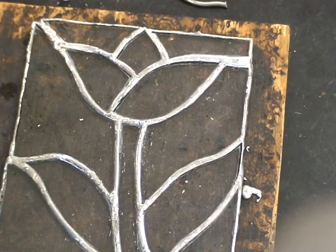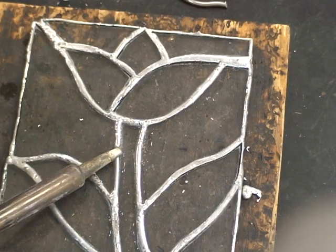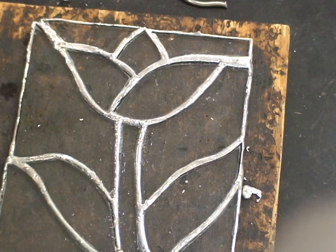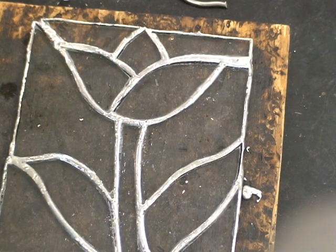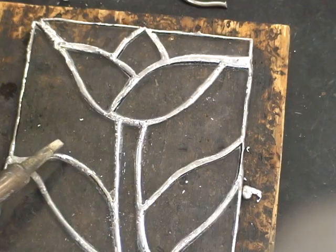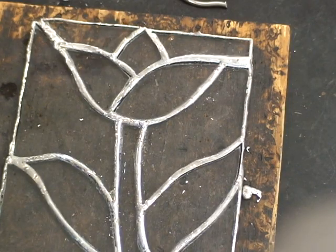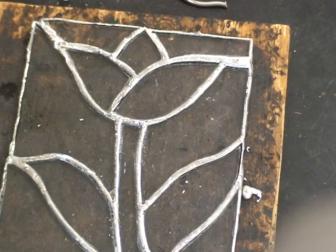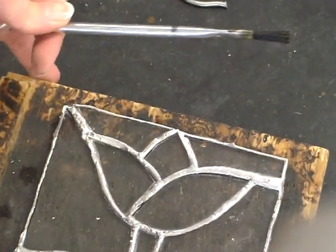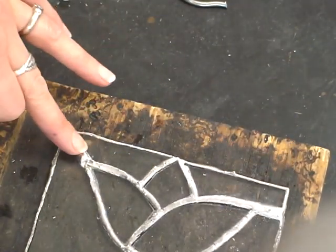Now, you want to get to the point where you do this right the first time, so that you don't have to go back over. Because the more you keep going over your solder seams, the more likely it is to run through to the other side, and then you have to fix it. As well, you can be breaking down your adhesive. The adhesive doesn't like to be exposed to so much heat that it starts to deteriorate. And it will. And that's not good. Be nice to your adhesive.